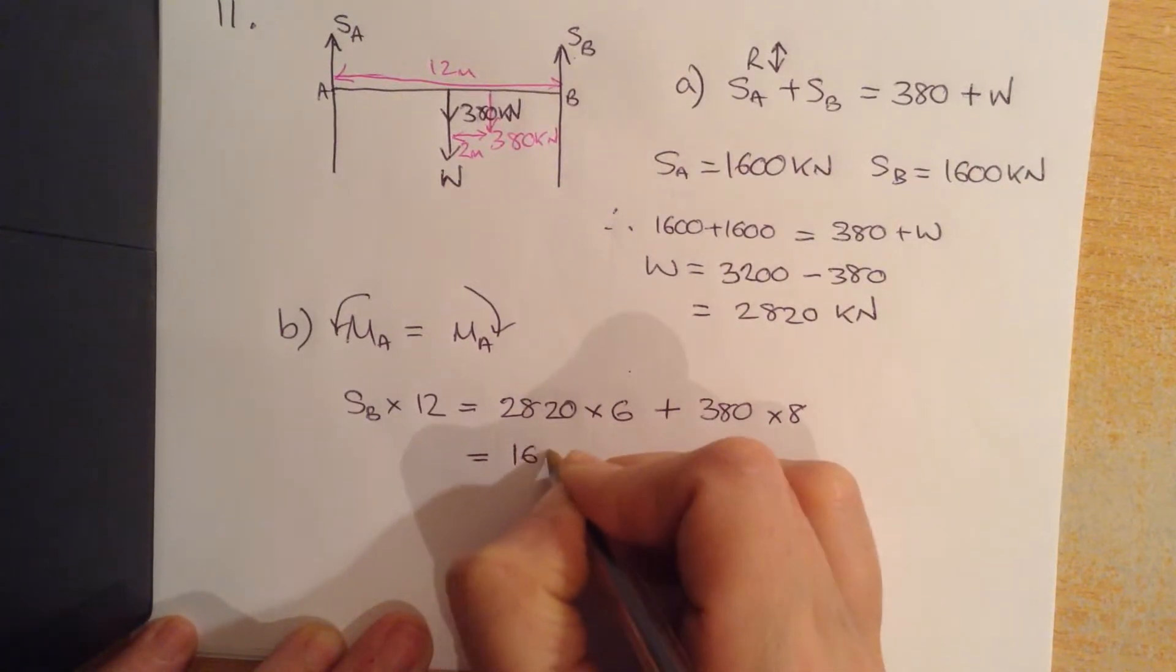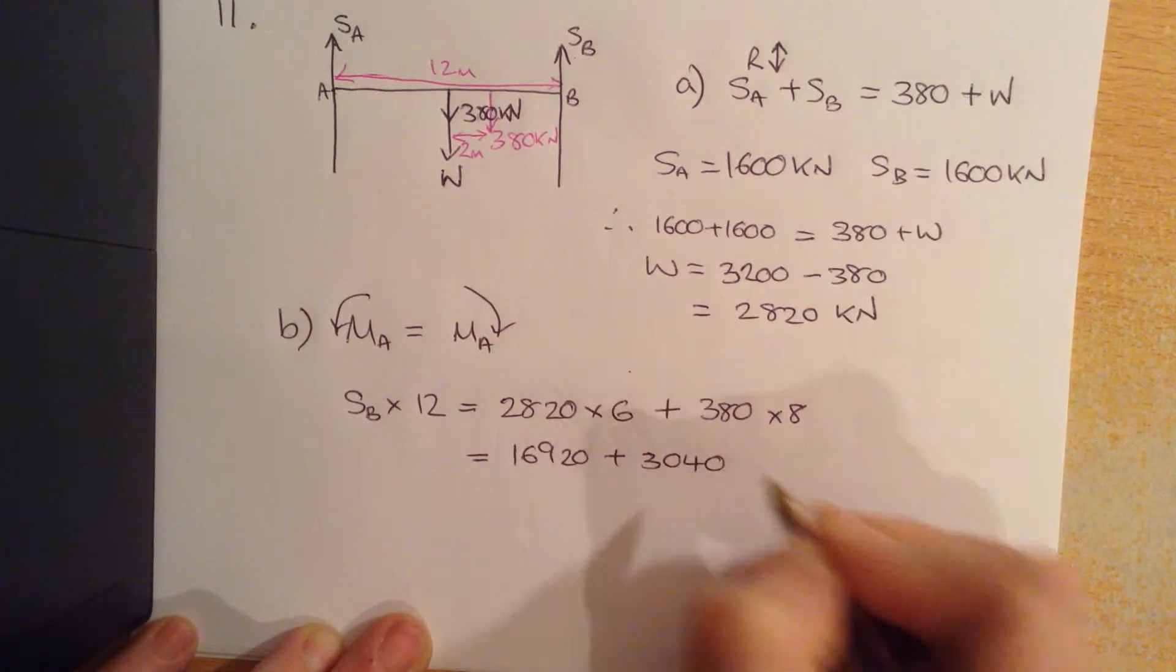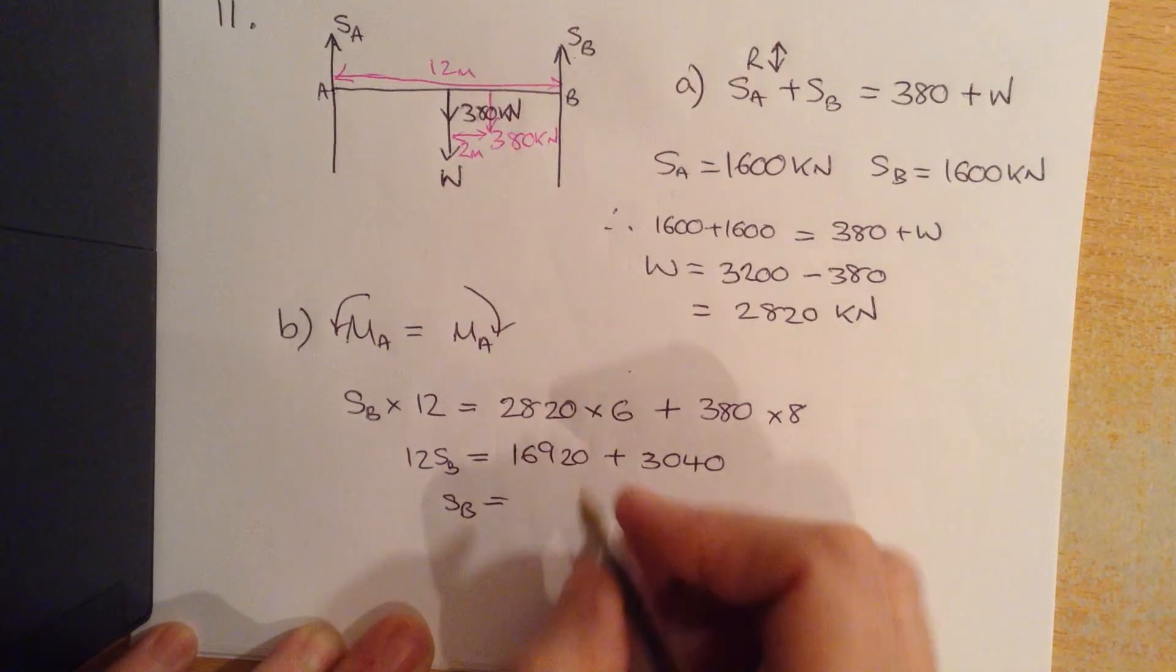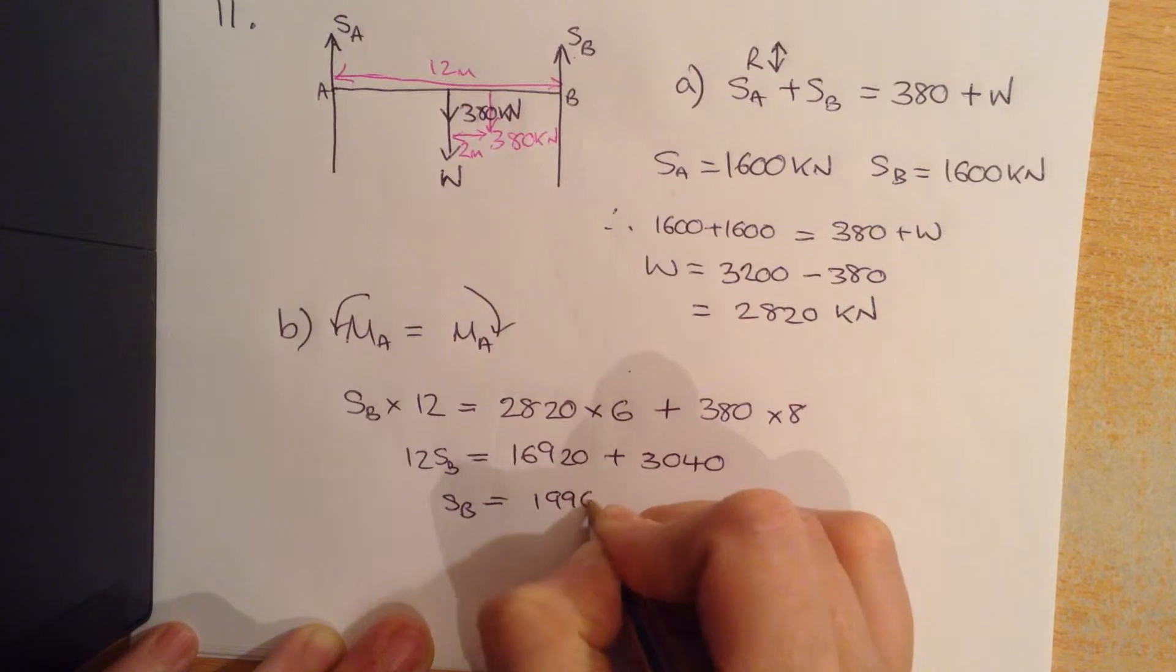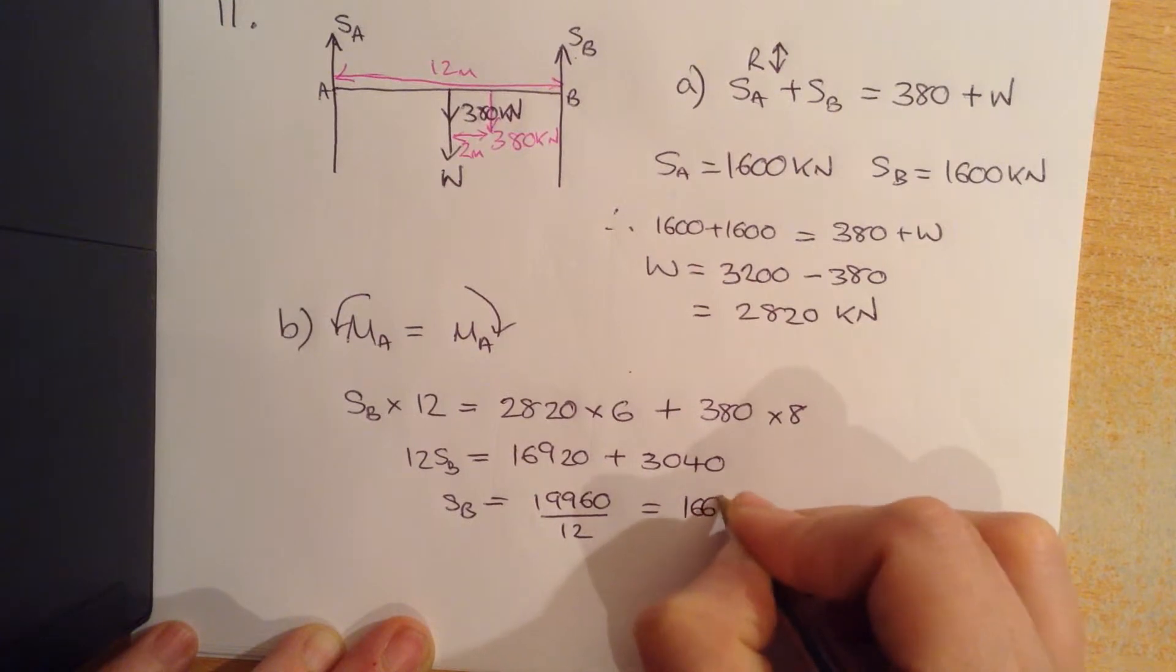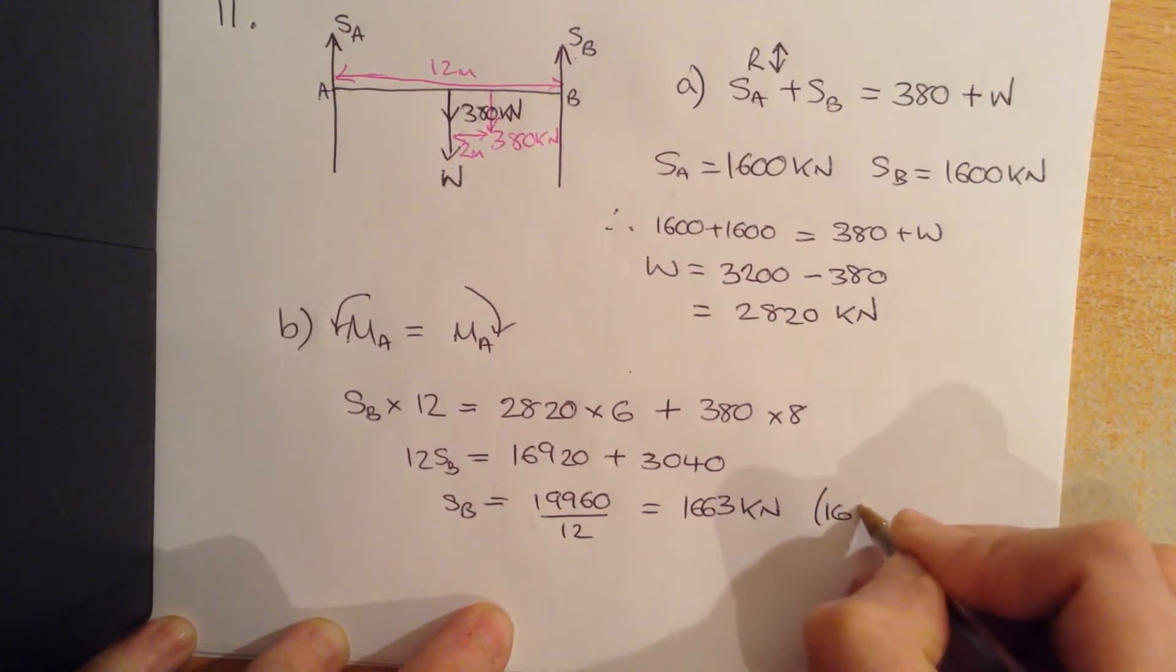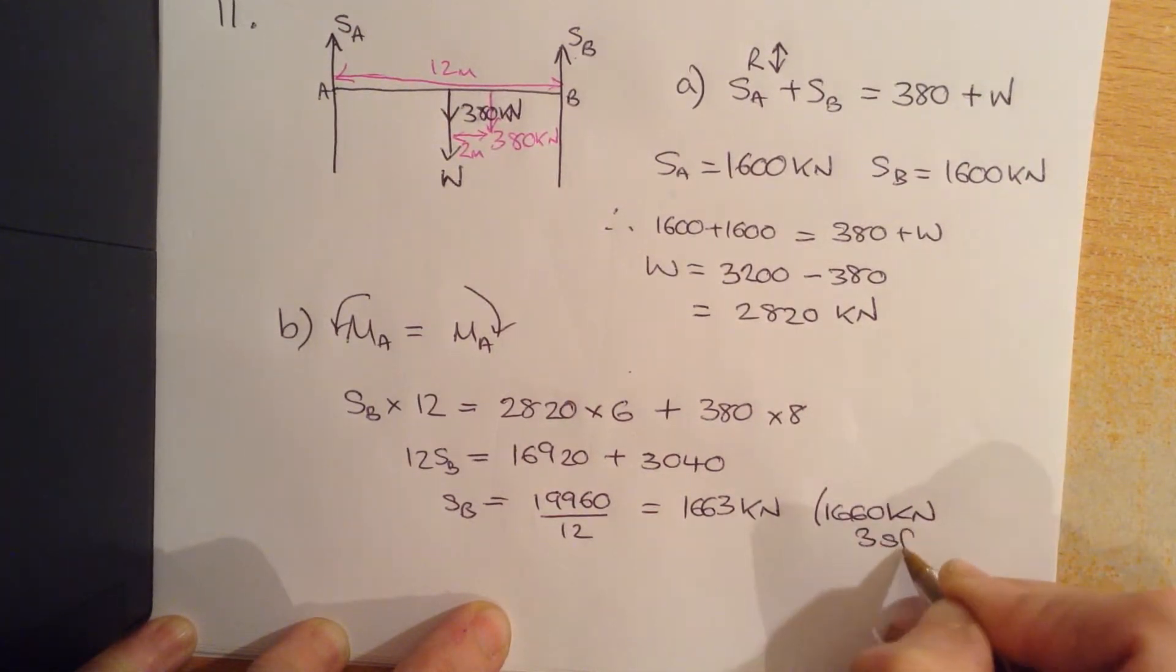So that will be equal to 12 lots of SB. So SB is equal to 19960, or you'd say that would be 1660 kilonewtons to 3 sig figs.